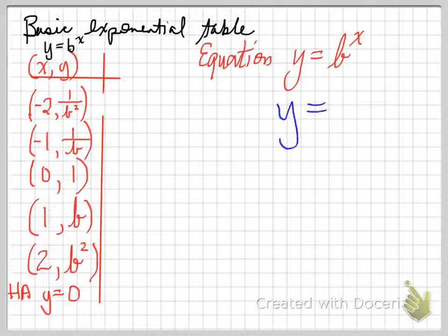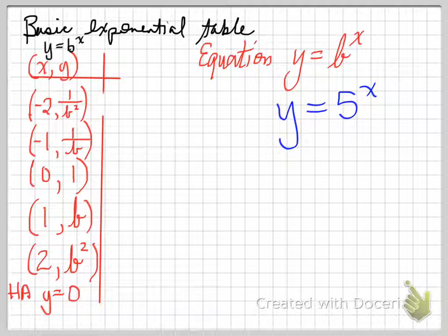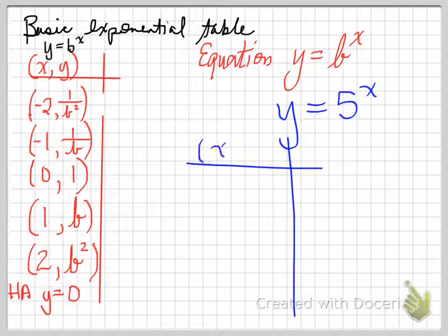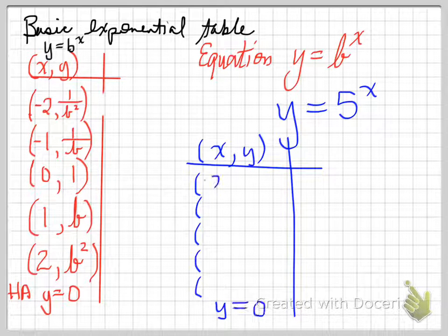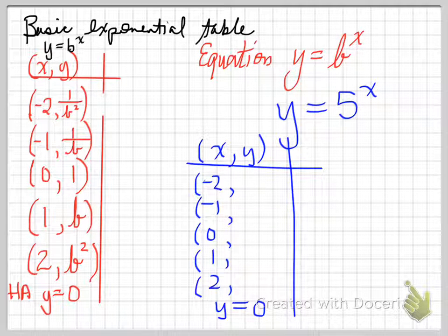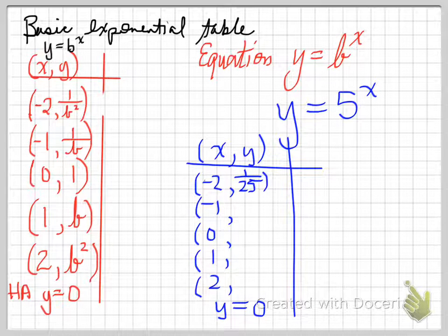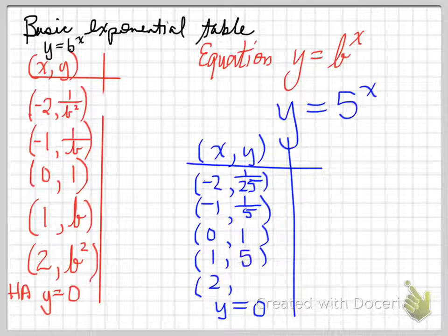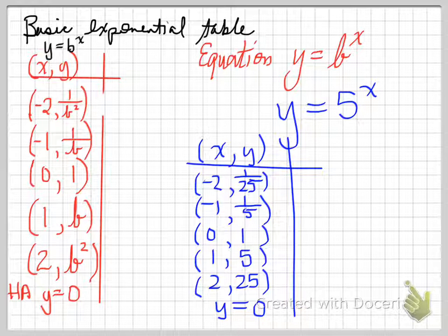Let's look at another example: y equals 5 to the x. When we plug in negative 2, negative 1, 0, 1, and 2 for x, we get: 5 to the negative 2 is 1 over 25; 5 to the negative 1 is 1 over 5; 5 to the 0 is 1; 5 to the 1 is 5; and 5 to the 2 is 25. Those are the basic table values for y equals 5 to the x.